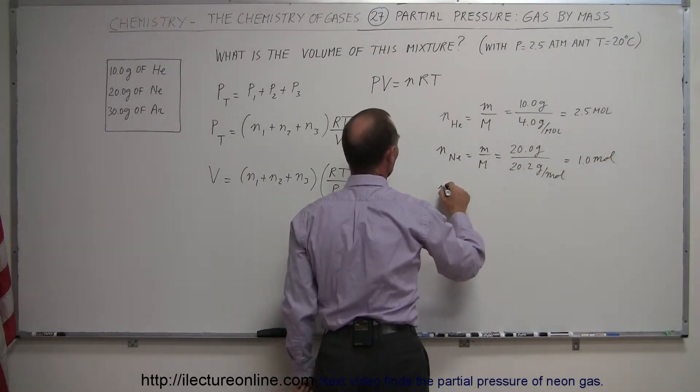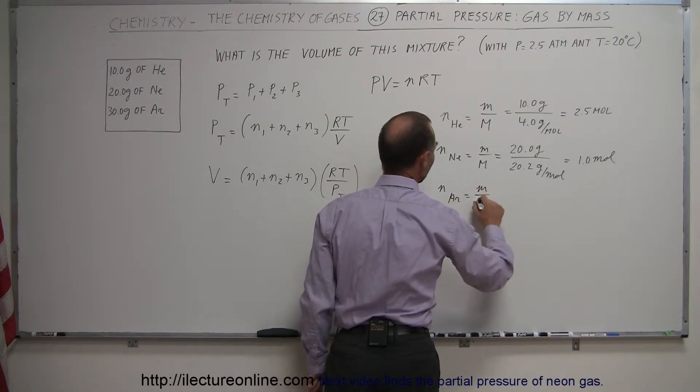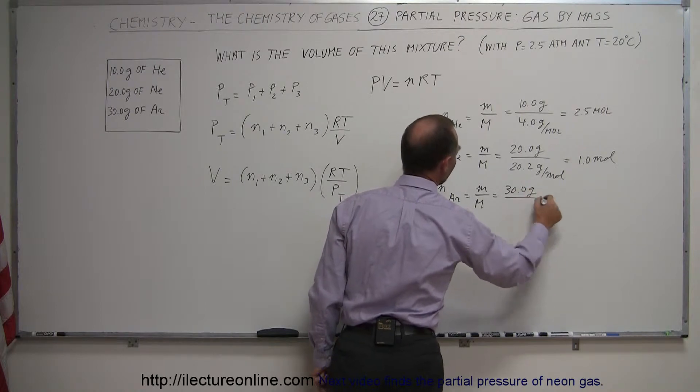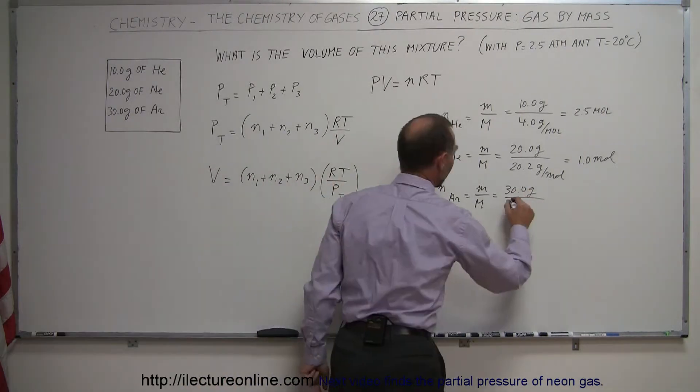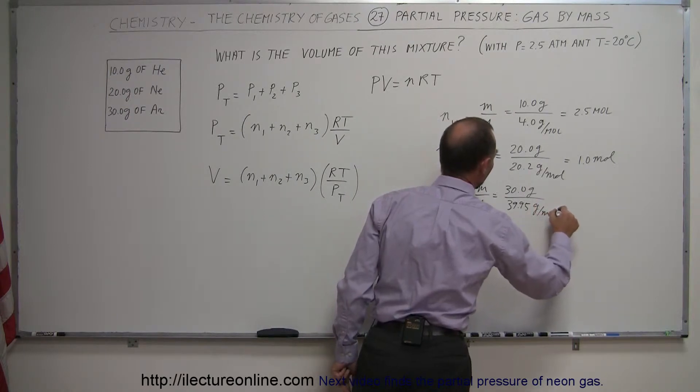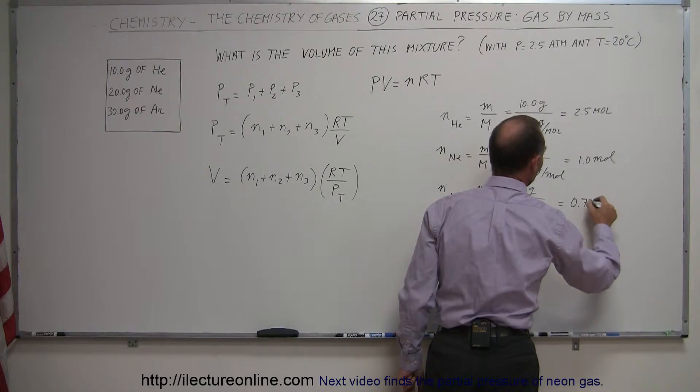The number of moles of argon equals the mass divided by the molar mass, which is 30 grams of argon. For argon, 39.95 grams per mole. That looks like about three quarters or 0.75 moles.